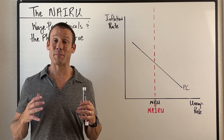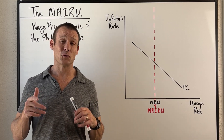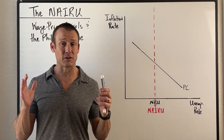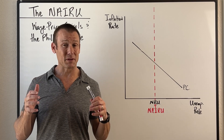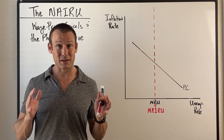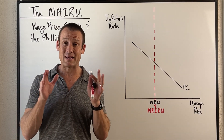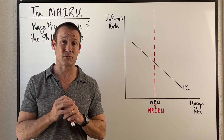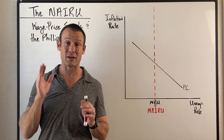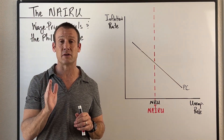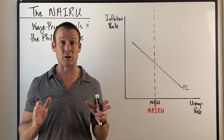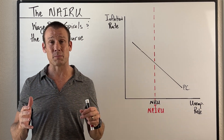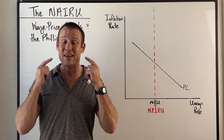Hey everybody, in this video we're probably biting off more than we can chew because we're talking about current events. The current event we're talking about is inflation — why? Because that's what everybody cares about in June of 2022. Here's what we're covering: the NAIRU, that's right, the non-accelerating inflation rate of unemployment, also wage-price spirals, fiscal and monetary policy, and letting the economy run hot.